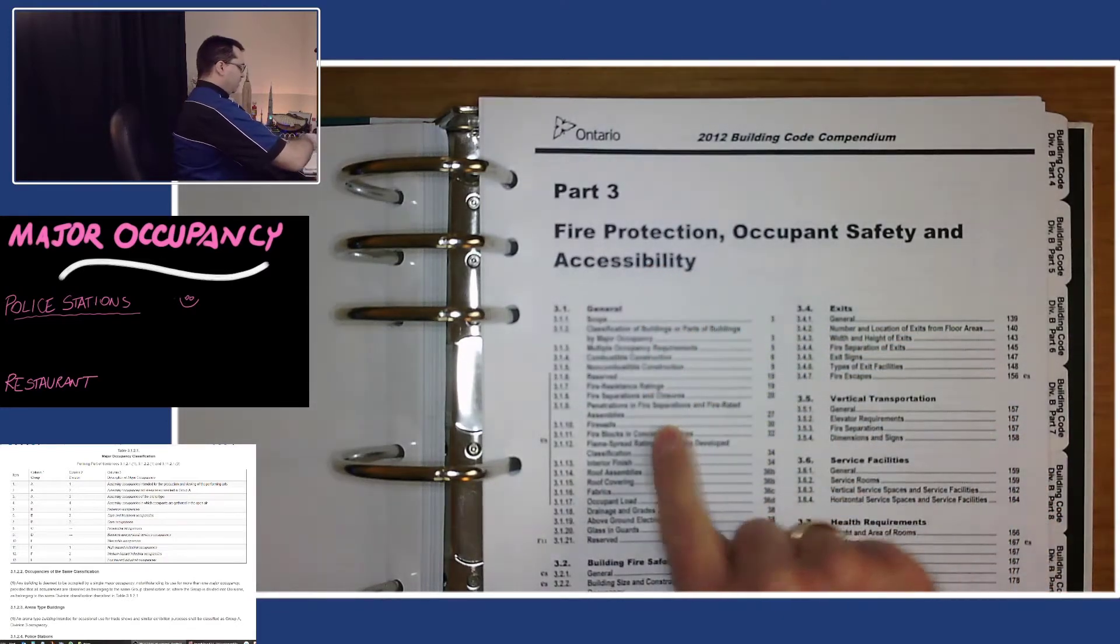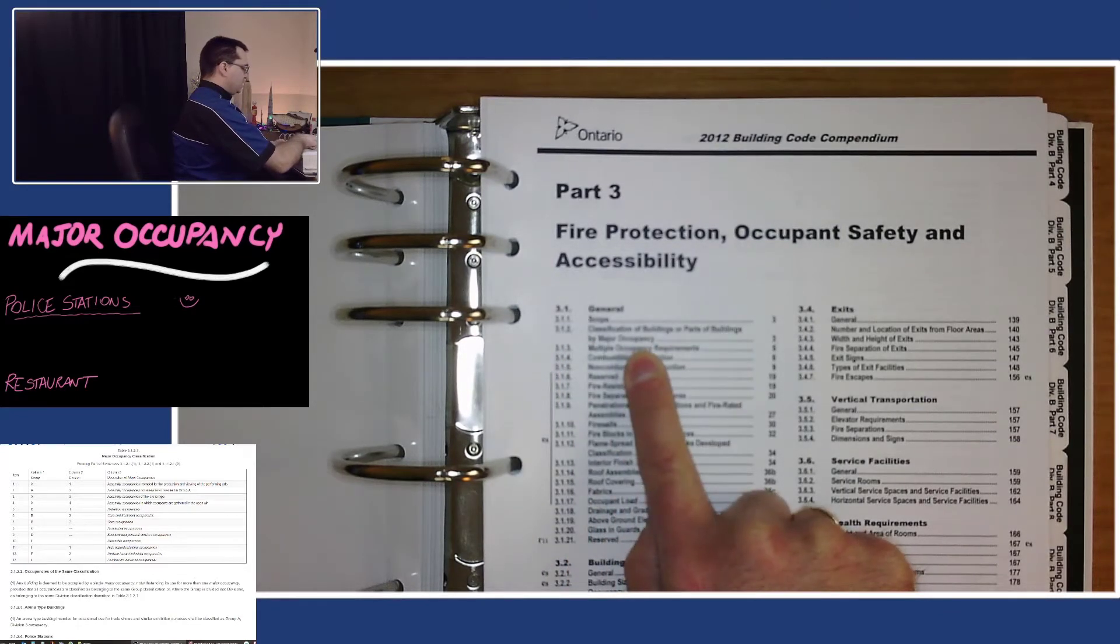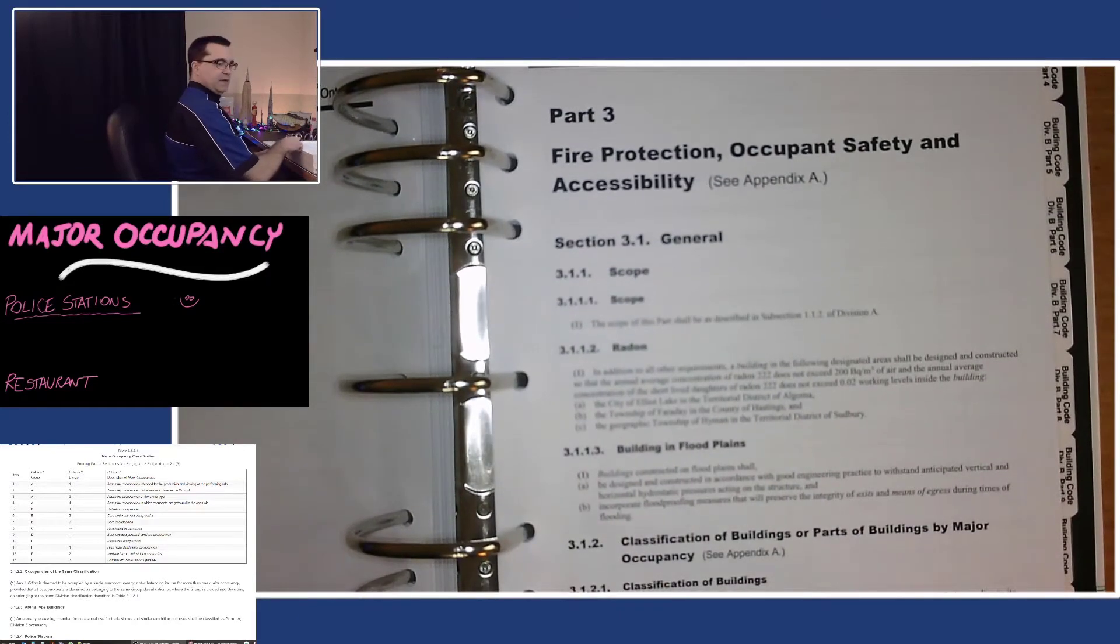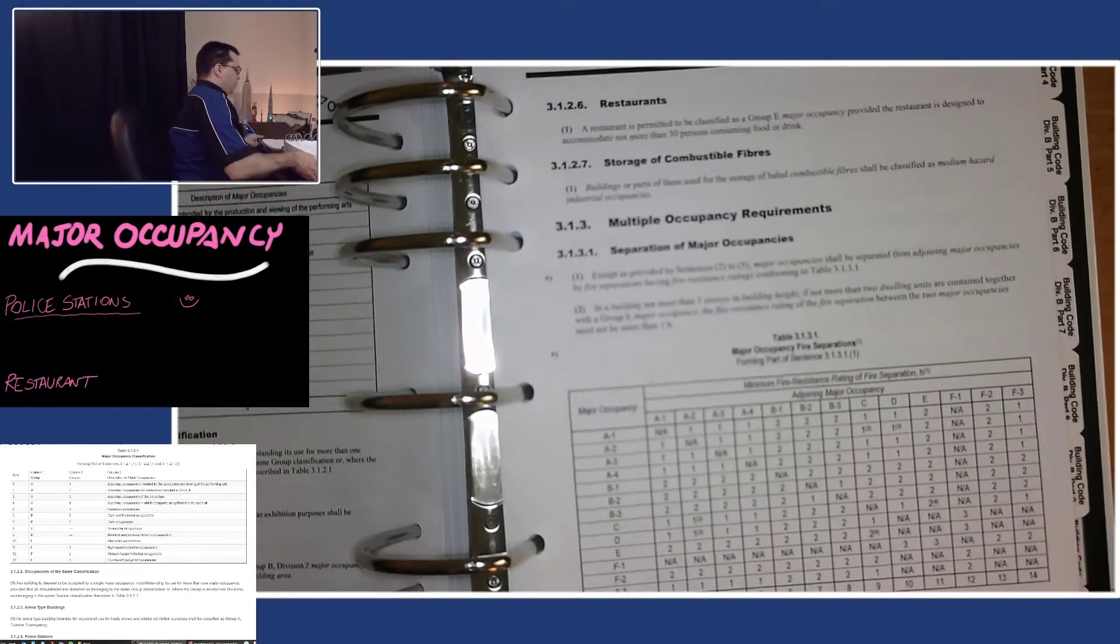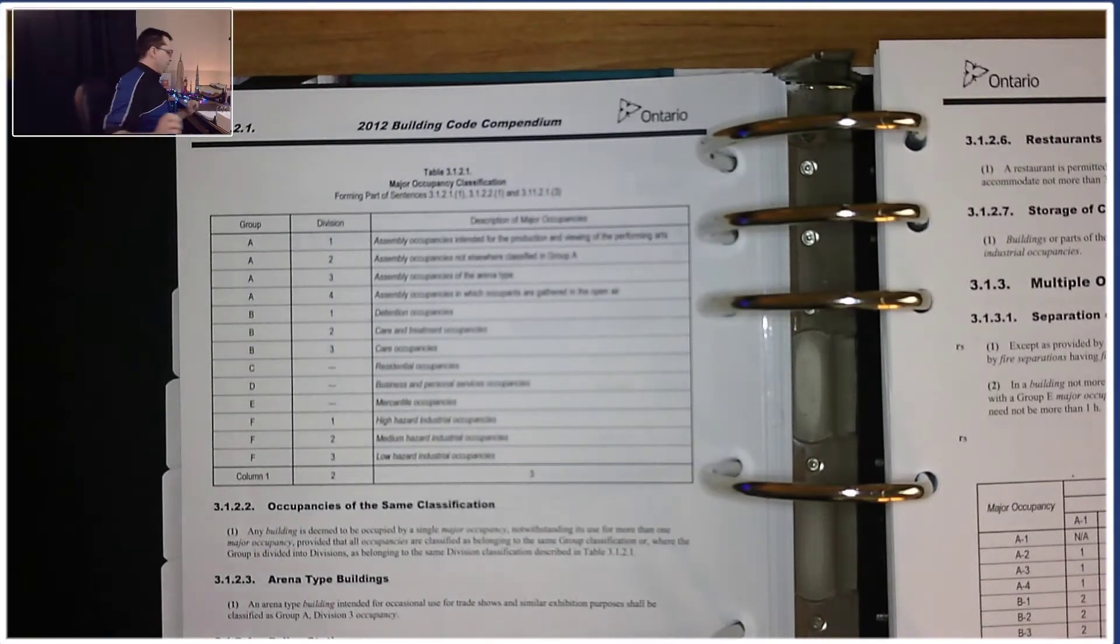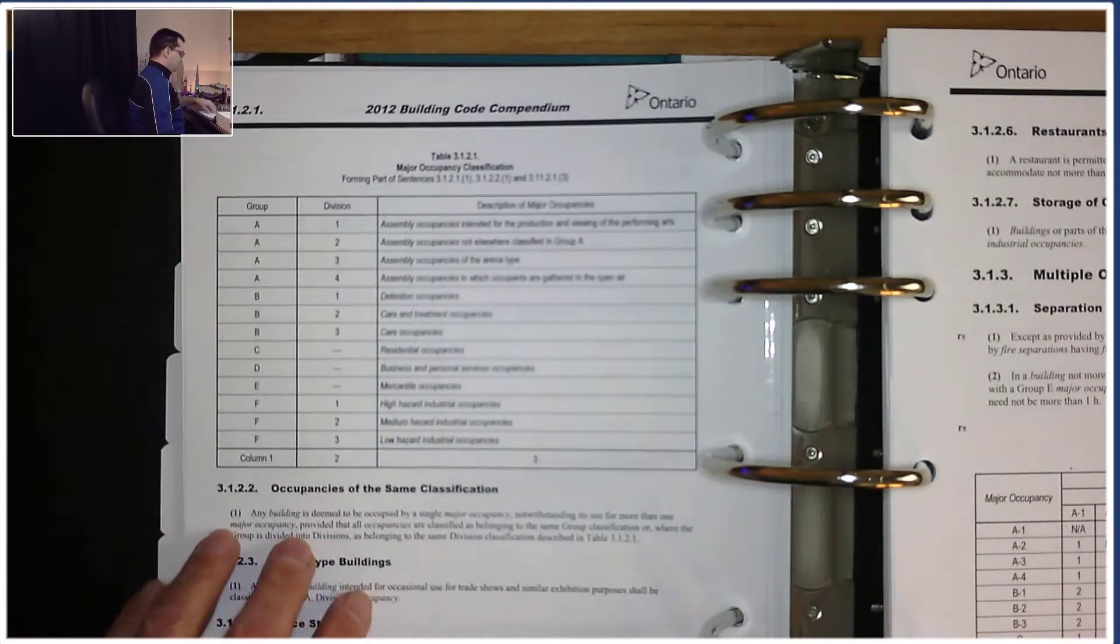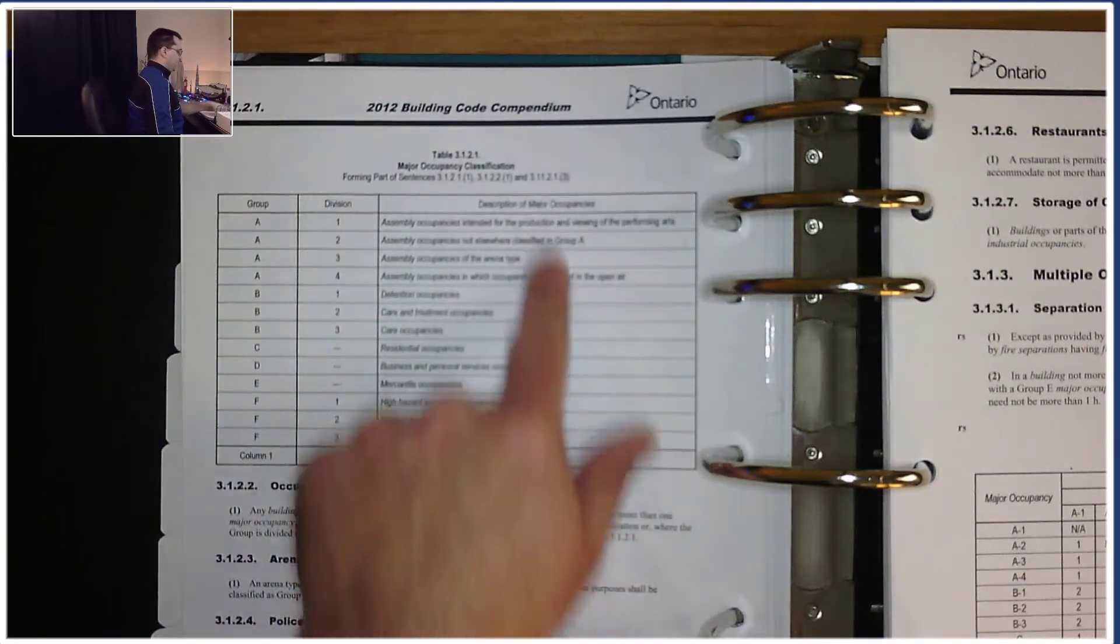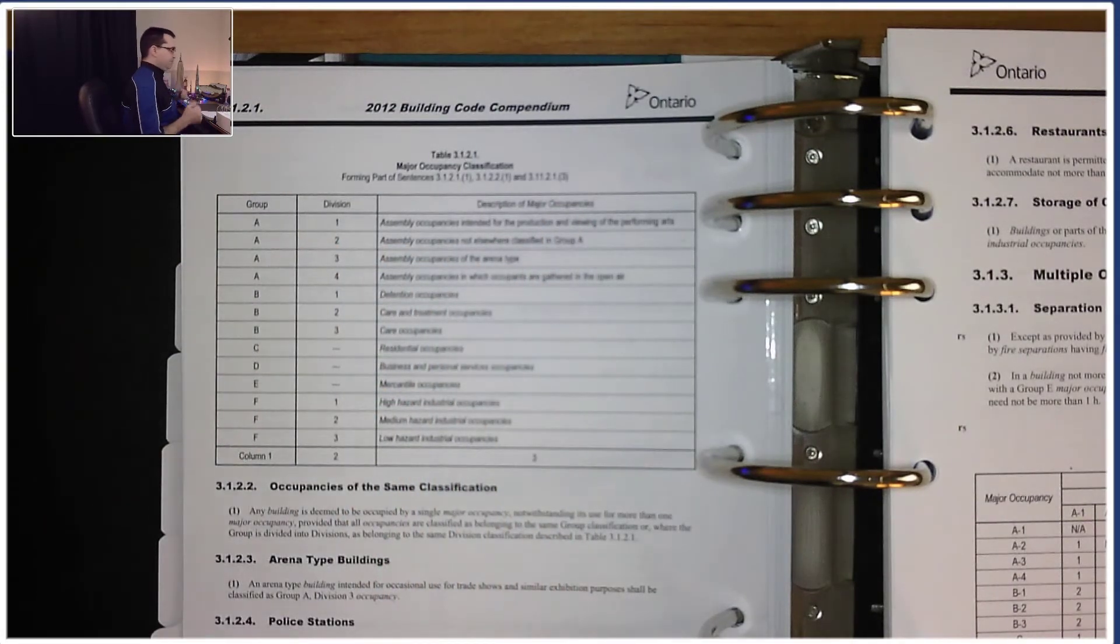I can look in the table of contents and find subsection 3.1.2 classification of buildings or parts of building by major occupancy. I know to go look at Table 3.1.2.1 right here. Now that we're in this table, I have all the occupancies broken down by group, division, and a description.